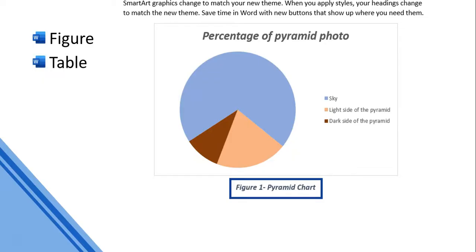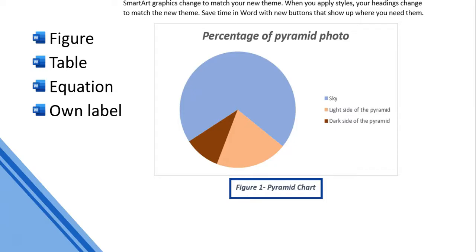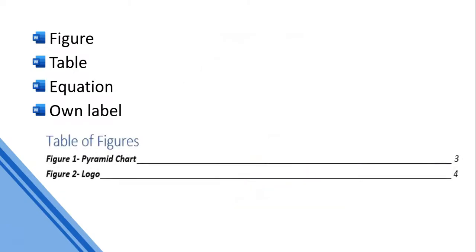There are options to do captions for figures, for tables, for equations in mathematical documents, or you can specify your own label. The powerful thing about captions is you can create a table of contents-style list for each label type - a list of all the figures or all the tables, showing which page each is on. By using captions you can create this dynamic list very easily and it will do it automatically.